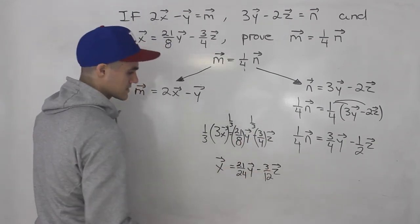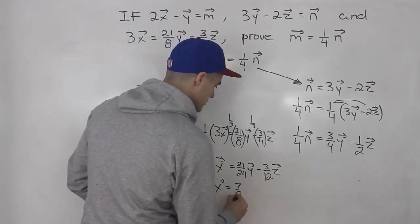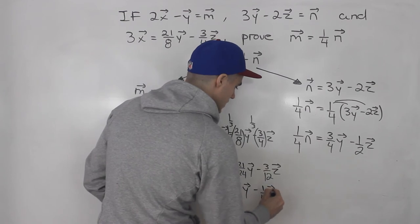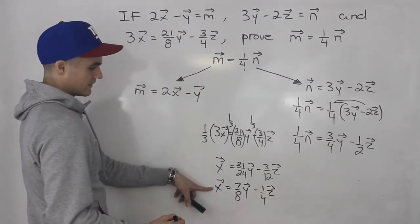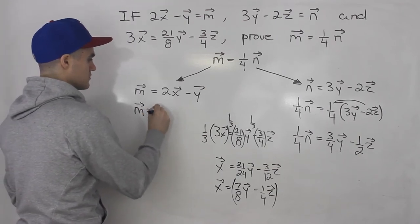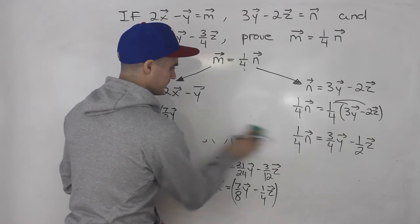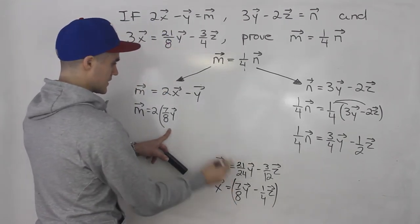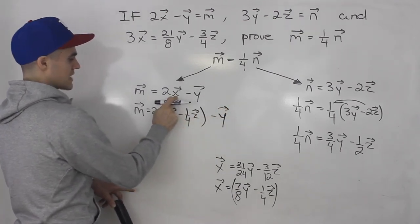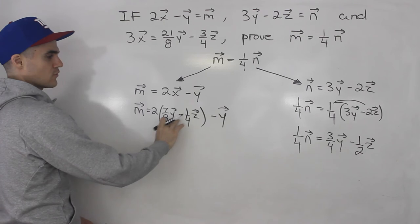Either way, you end up with that expression for x. Notice we can reduce those fractions: 21 over 24 reduces to 7 over 8 times vector y, and 3 over 12 reduces to 1 over 4 times vector z. So vector x equals 7 over 8 times vector y minus 1 over 4 times vector z. Now we can substitute this expression into vector m. So vector m equals 2 times the bracket 7 over 8 times vector y minus 1 over 4 times vector z, minus vector y. Now vector m is entirely in terms of y and z. We just have to simplify.